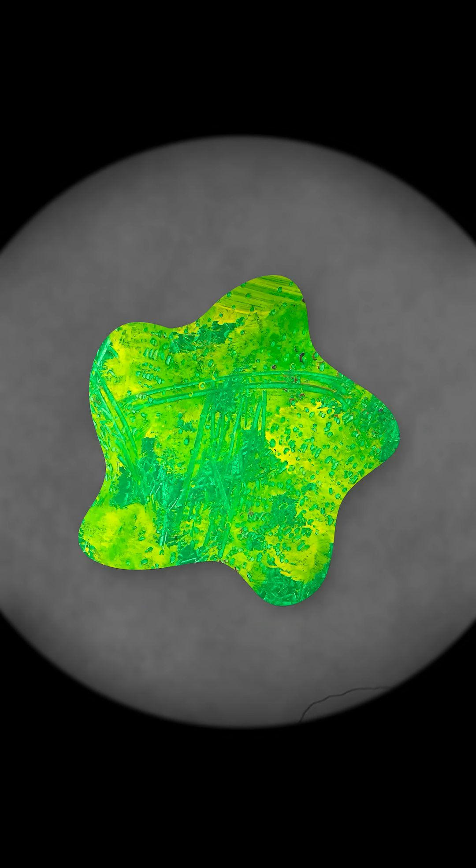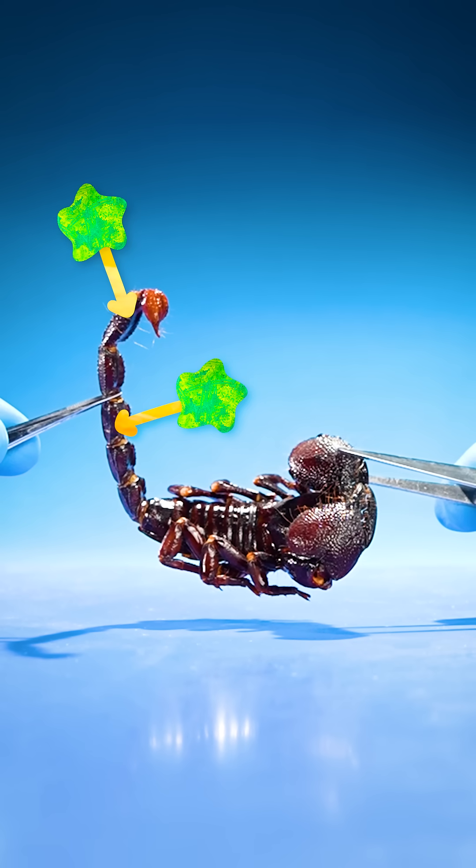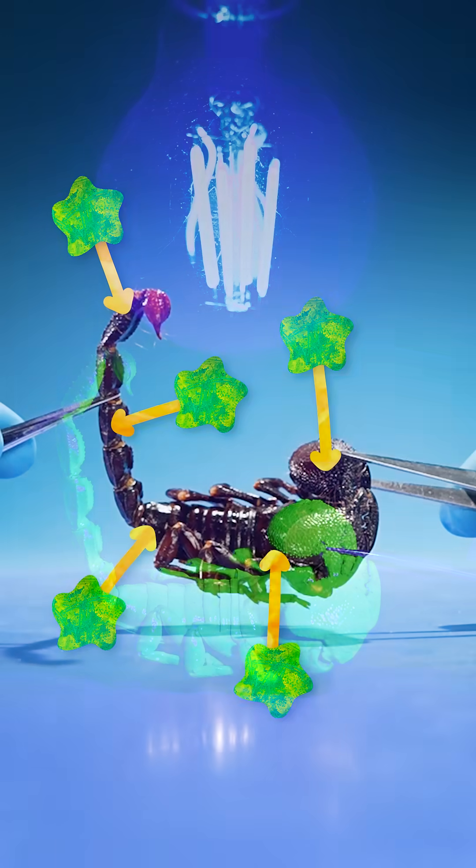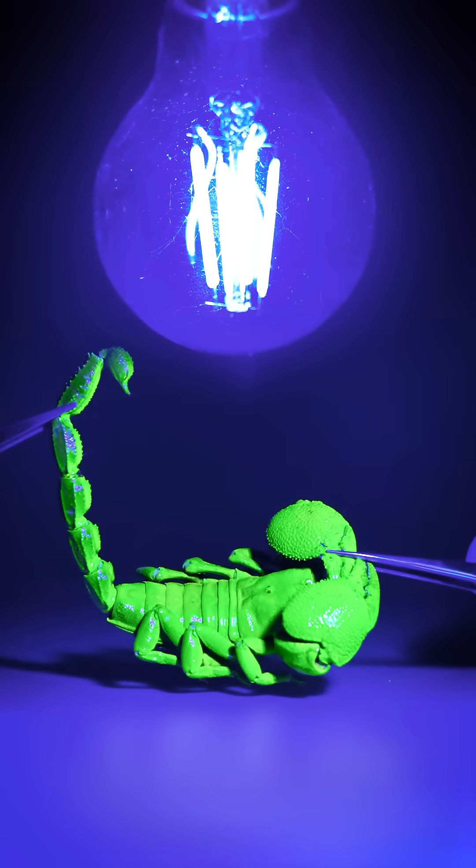The special compounds that absorb and re-emit light that make animals glow can be found all over a scorpion's exoskeleton. That's why they glow all over the place.